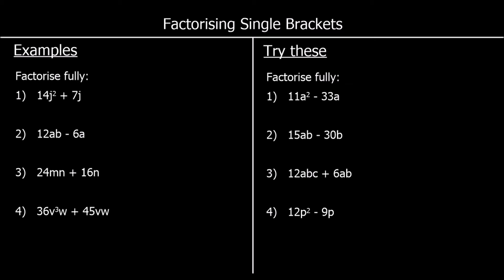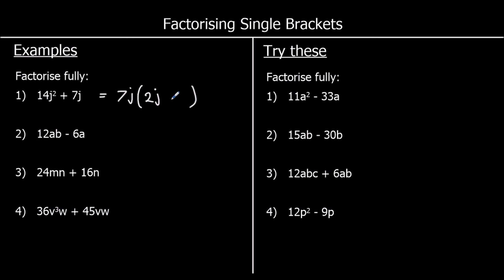So let's look at the first one: 14j squared plus 7j. 14 and 7 are both in the 7 times table, so we can take 7 outside. And j squared and j have both got a j in them — because j squared is j times j — so we can take a j outside the bracket too. So we have 7j outside. 7j times what makes 14j squared? 7 times 2 makes 14, and j times j makes j squared. And 7j times what makes 7j? That's just 1.